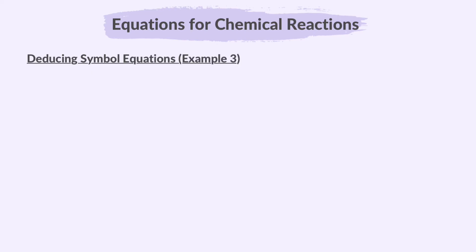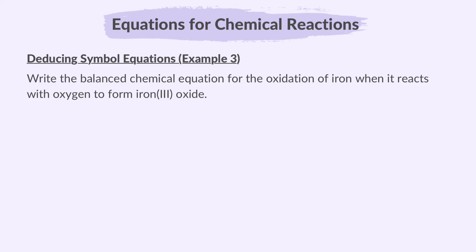Now, you might be getting the hang of it. In this example, you have been asked for the balanced chemical equation for the oxidation of iron when it reacts with oxygen to form iron-3 oxide. Iron can exhibit different oxidation states. In this case, it's mentioned 3 in the iron-3 oxide, so we know it forms a Fe3 plus ion. So let's see how the formula is derived. Criss-crossing the valences gives you Fe2O3.